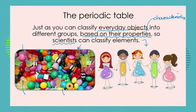So what are some of the characteristics that scientists could use to sort our different elements? We have spoken a couple of times about the element that we call sodium and how sodium explodes when it comes into contact with water. So we could use this characteristic of reactivity with water, and we could look at all the elements we know and say these elements react explosively with water and these elements don't.